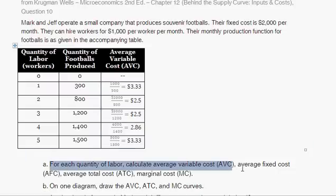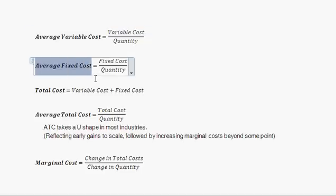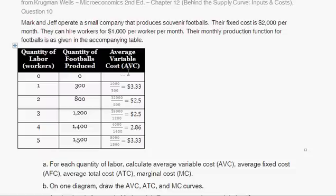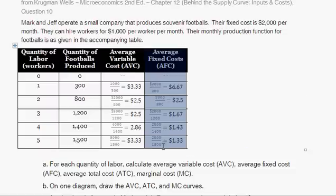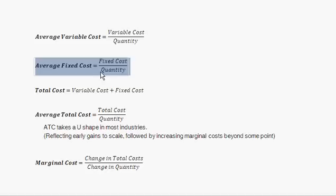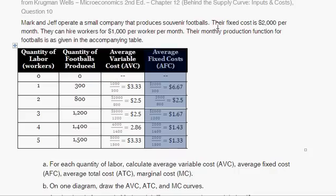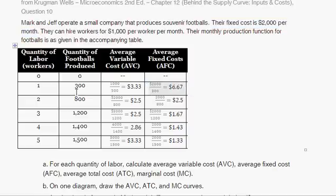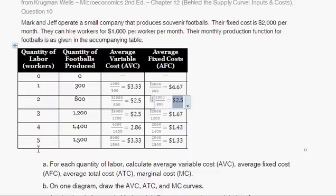We're also asked to find average fixed cost. Average fixed cost equals fixed cost divided by quantity. The fixed cost is $2,000 per month. So the average fixed cost given 300 footballs produced is $2,000 divided by 300, which is $6.67. The average fixed cost given 800 footballs produced is $2,000 divided by 800, which is $2.50. And for 1,500 footballs produced, it's $2,000 divided by 1,500, giving an average fixed cost of $1.33.